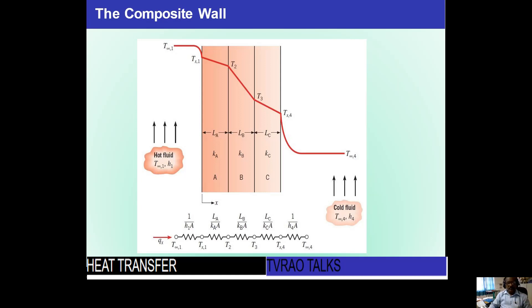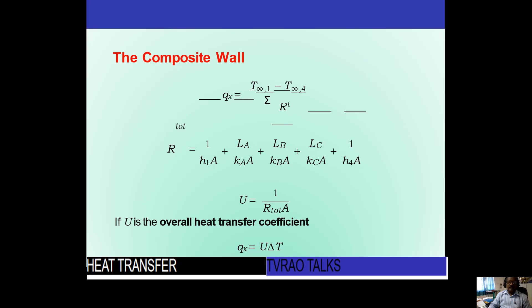So we have R1, R2, R3, R4, R5. The total resistance is sigma R, which is R1 + R2 + R3 + R4 + R5. Once we know the total resistance, heat transfer is simply Q = delta T / R, where delta T is the starting temperature minus the ending temperature. This is how we find out the heat transfer in a composite wall.